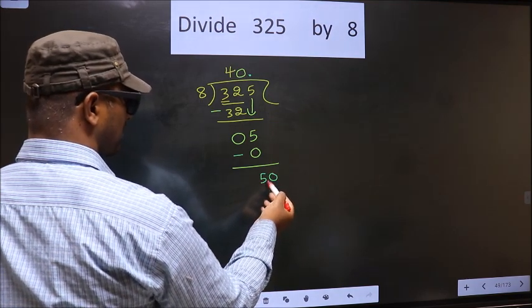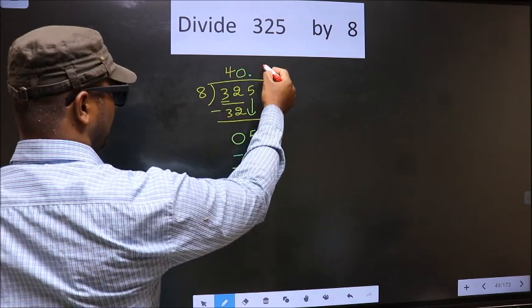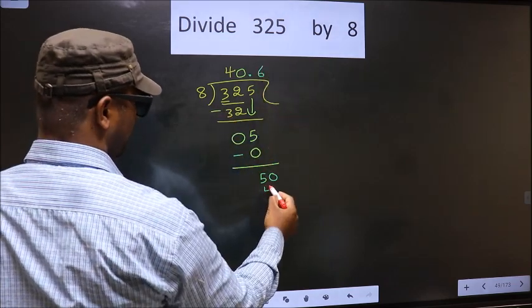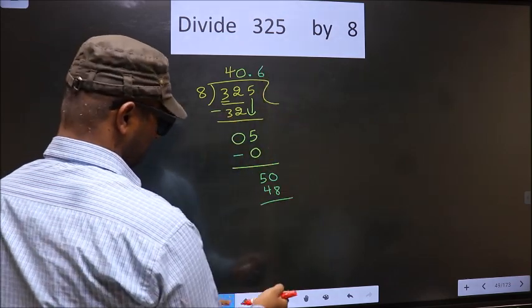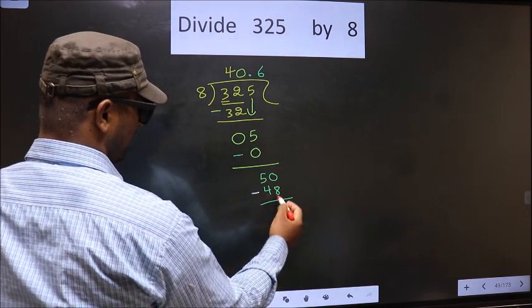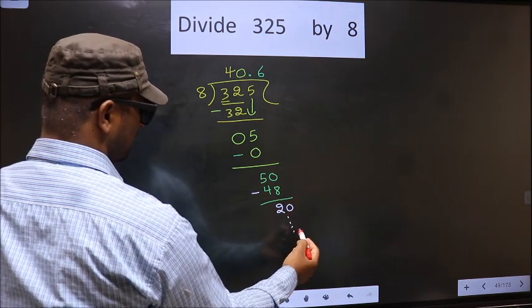So here 50, a number close to 50 in the 8 table: 8 times 6 is 48. Now you subtract, you get 2, take 0, continue the division.